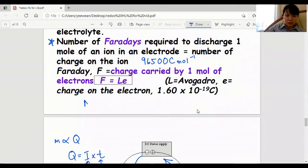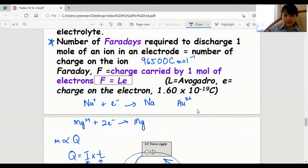For sodium, one Faraday is needed to get a mole of sodium. For magnesium, two Faradays are needed to deposit one mole of magnesium. For gold three plus, three Faradays are needed to deposit a mole of gold. The Faraday is the charge carried by a mole of electrons, which is 1.60 times 10 to the power of negative 19 coulombs.